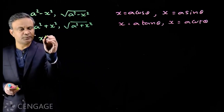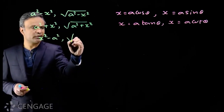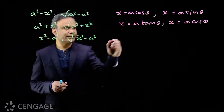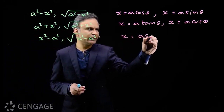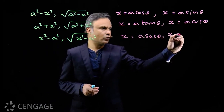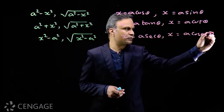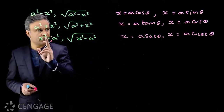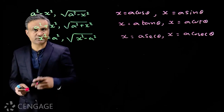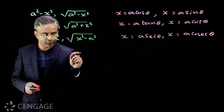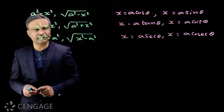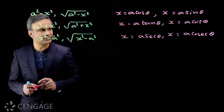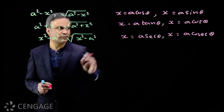If we have an expression like x² - a² or √(x² - a²), we put x = a secθ or x = a cosθ. If we choose x = a secθ, then we have a² sec²θ - a² = a² tan²θ, because sec²θ - 1 = tan²θ. So we choose our substitution based on which trigonometric identity fits.